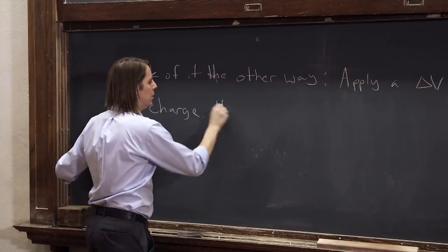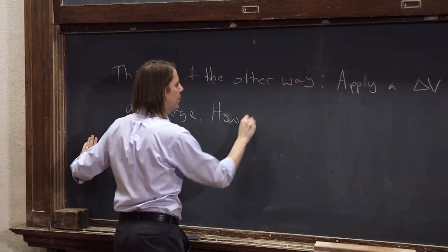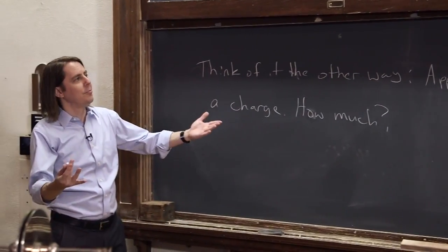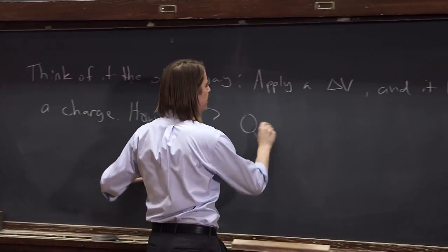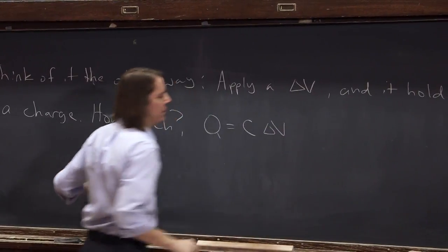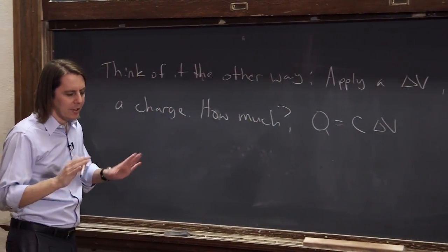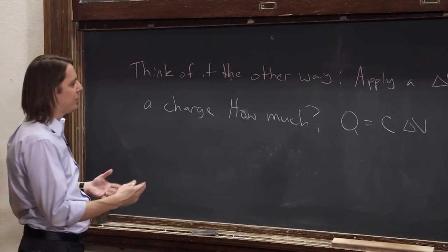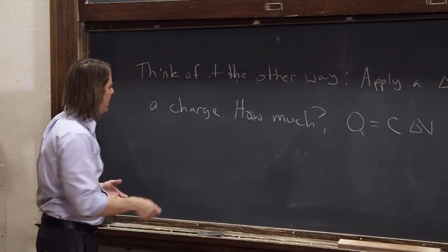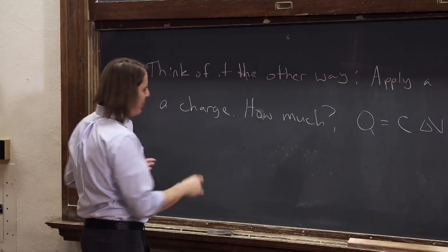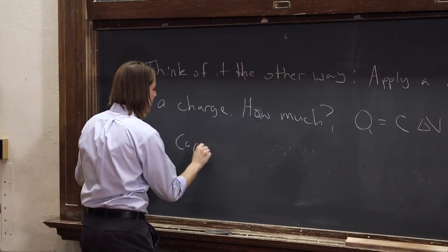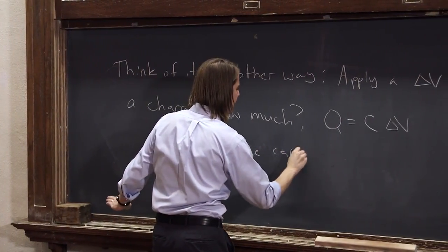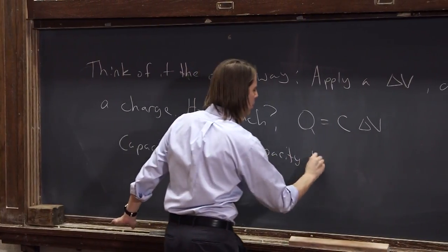How much charge do you get? Well, it's really the same formula. The charge you get is that Q, the charge you get, is the capacitance times delta V. So it's no different. It's really the same idea. It's just usually in a circuit, you apply voltages to things and you see what happens. So the capacitor, you apply voltage, this is how much charge you would get. So really, the capacitor, capacitance is the capacity to hold charge.